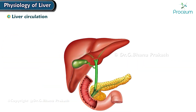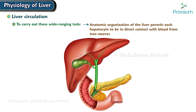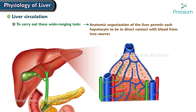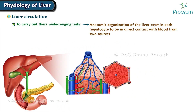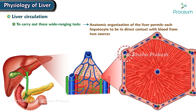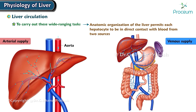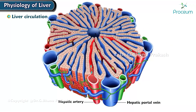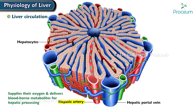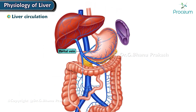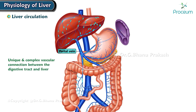Liver circulation. To carry out these wide-ranging tasks, the anatomic organization of the liver permits each hepatocyte to be in direct contact with blood from two sources: arterial blood coming from the aorta, and venous blood coming directly from the digestive tract. Hepatocytes receive fresh arterial blood via the hepatic artery, which supplies oxygen and delivers blood-borne metabolites for hepatic processing. Venous blood also enters the liver by the hepatic portal system, a unique and complex vascular connection between the digestive tract and liver.